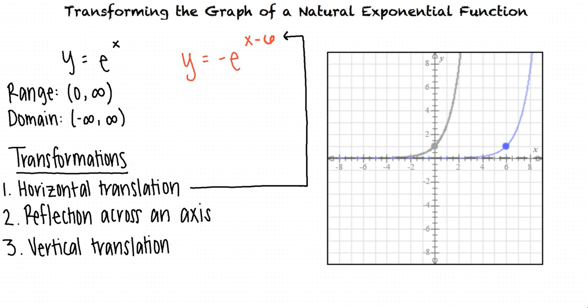Next, we need to see if we're reflecting the graph across an axis. Well, I noticed that there's a negative sign next to e, so I think we reflect the graph, but I'm not sure which axis to reflect it across.